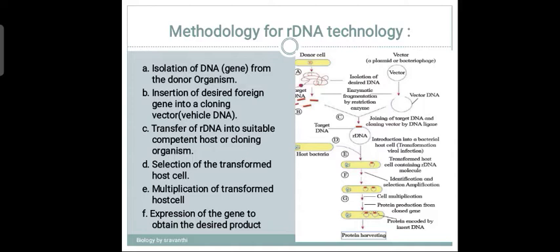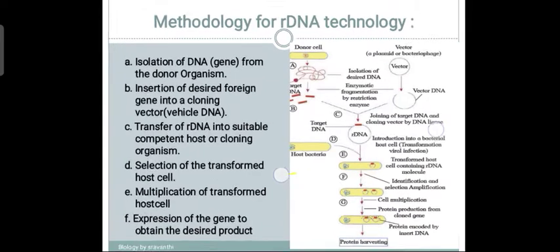The fifth step is multiplication of the transformed host cell, and the sixth is expression of the gene to obtain the desired product. These are the six steps necessary for rDNA technology. Now let us learn deeply about each step.